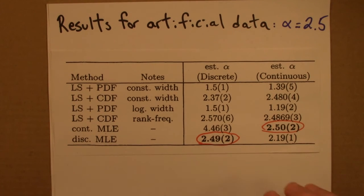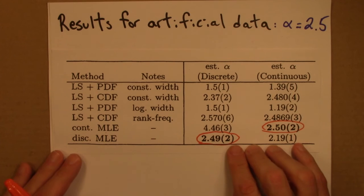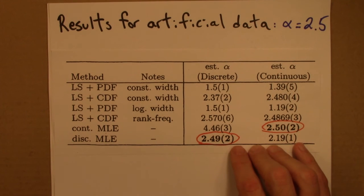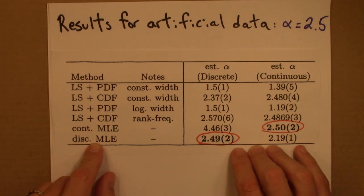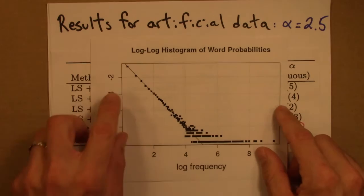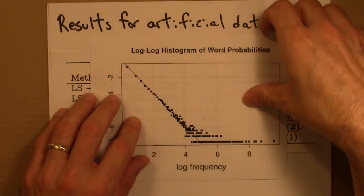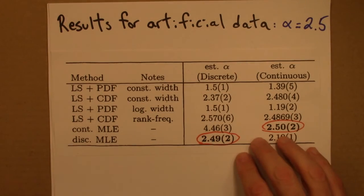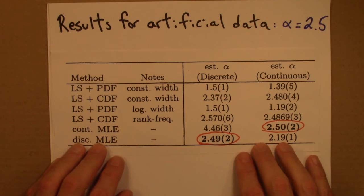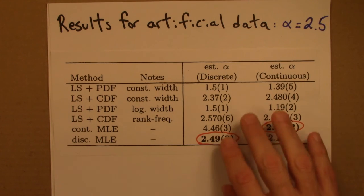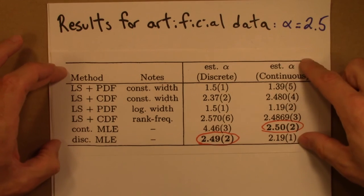That the reliable way to estimate exponents for power laws is to use the maximum likelihood estimators. And that doing anything else, tempting as it may be, fitting a line through this for instance, can give results that are badly off. Okay. So, that's the main take home from here.